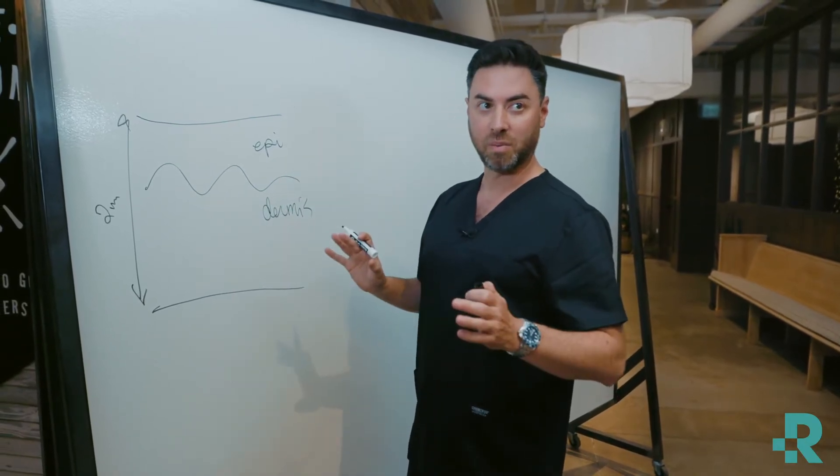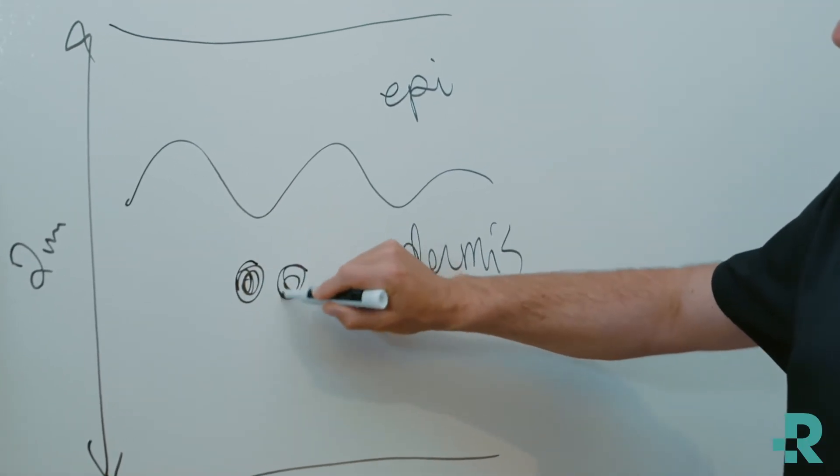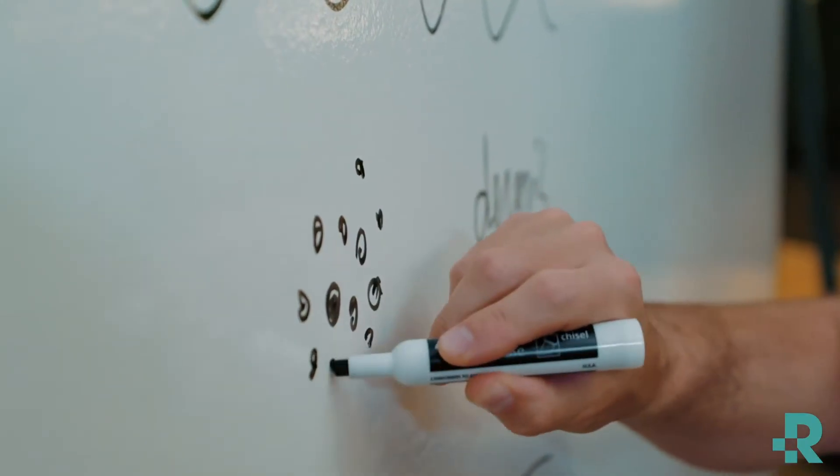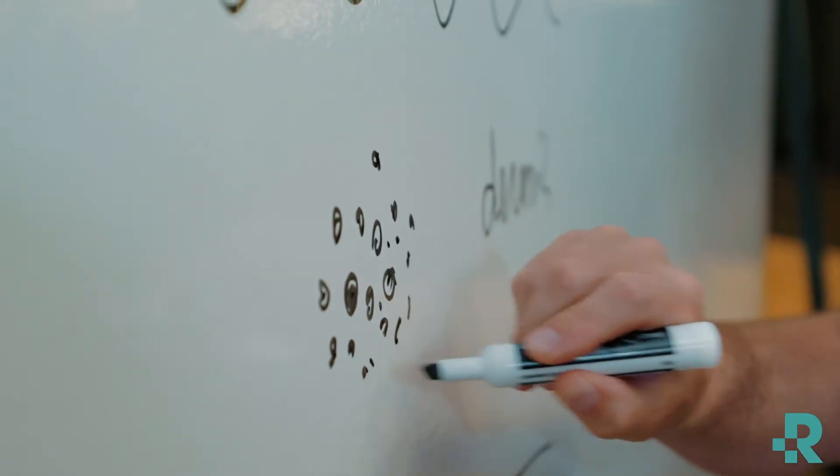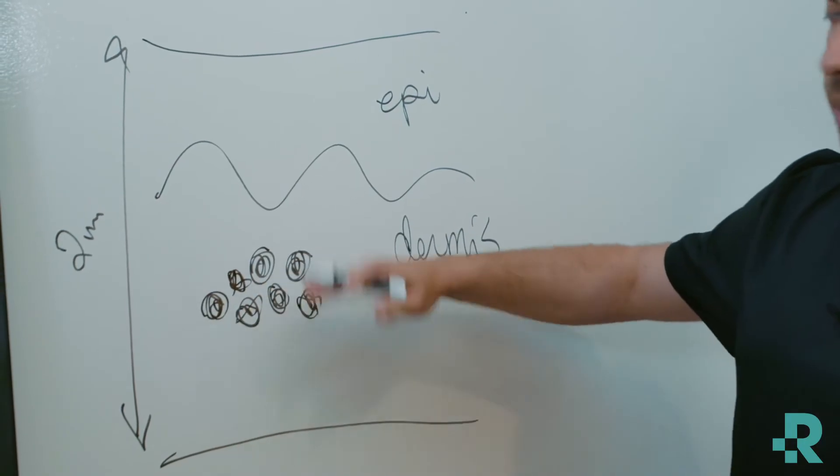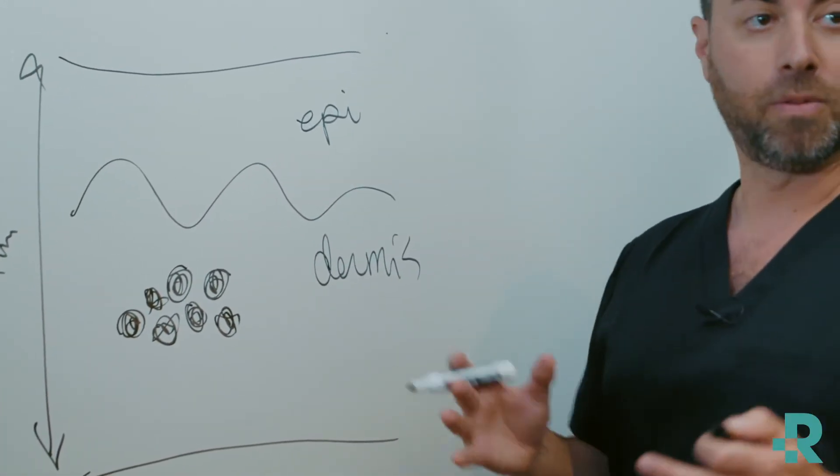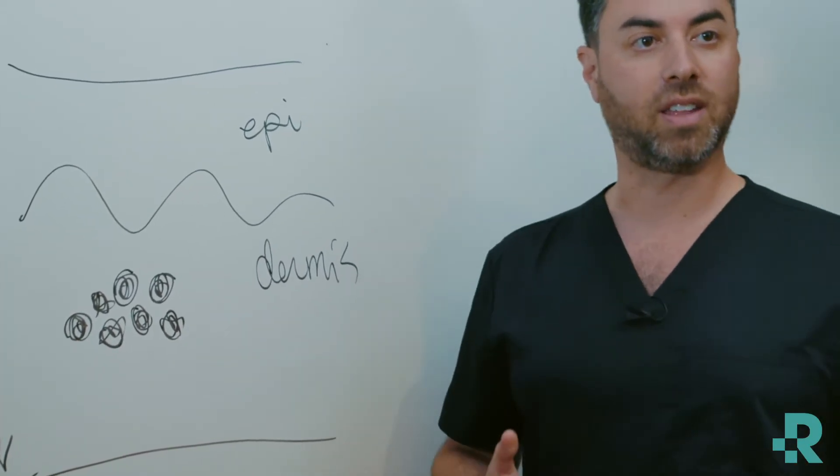The ink particles live in the dermis. So when you have a tattoo, the tattoo artist is going back and forth, putting as much ink as they can into the mid dermis, where it will sit and hang out, hopefully forever, or in this case, until you've decided that it's time to get rid of the tattoo.